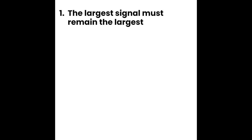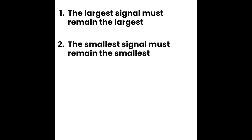First, the largest signal must remain the largest. If you have really strong signals, they still have to be coded as the strongest signals out of the group. Second, the smallest signals must remain the smallest. If you have a very weak signal coming back, it also has to be recorded as the weakest signal. You can't start flip-flopping things — if you do, you're going to start introducing errors.